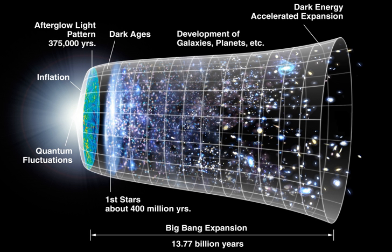Measurements of the redshift-magnitude relation for type Ia supernovae indicate that the expansion of the universe has been accelerating since the universe was about half its present age. To explain this acceleration, general relativity requires that much of the energy in the universe consists of a component with large negative pressure, dubbed dark energy. Measurements of the cosmic microwave background indicate that the universe is very nearly spatially flat, and therefore according to general relativity the universe must have almost exactly the critical density of mass and energy. But the mass density of the universe can be measured from its gravitational clustering, and is found to have only about 30 percent of the critical density. Since theory suggests that dark energy does not cluster in the usual way, it is the best explanation for the missing energy density.